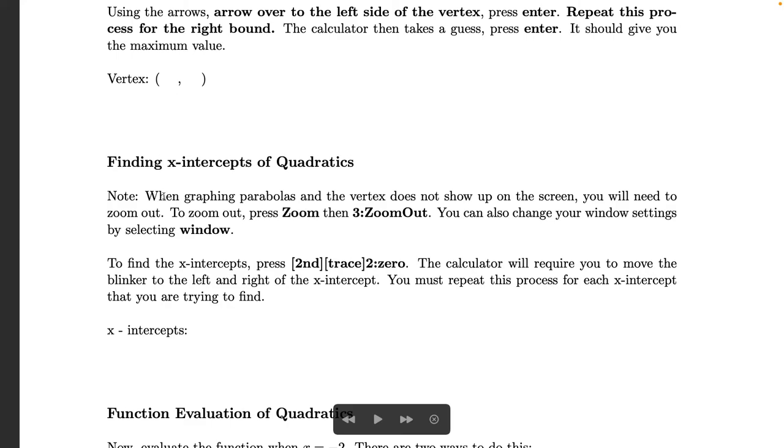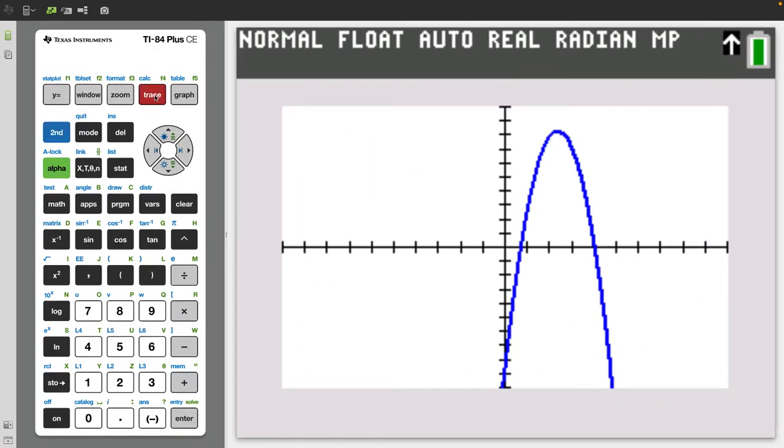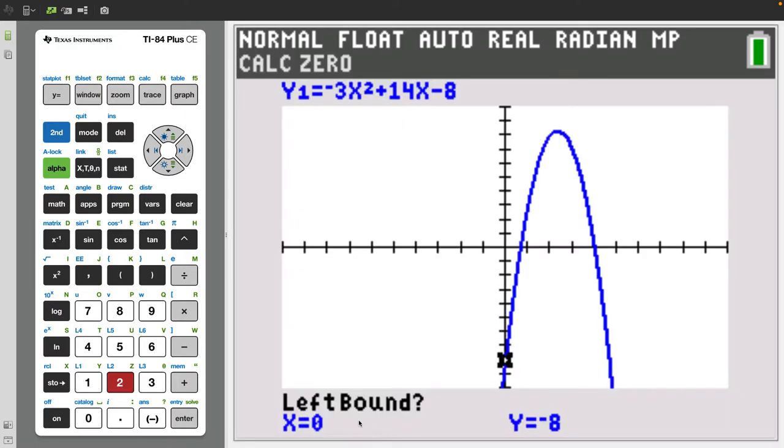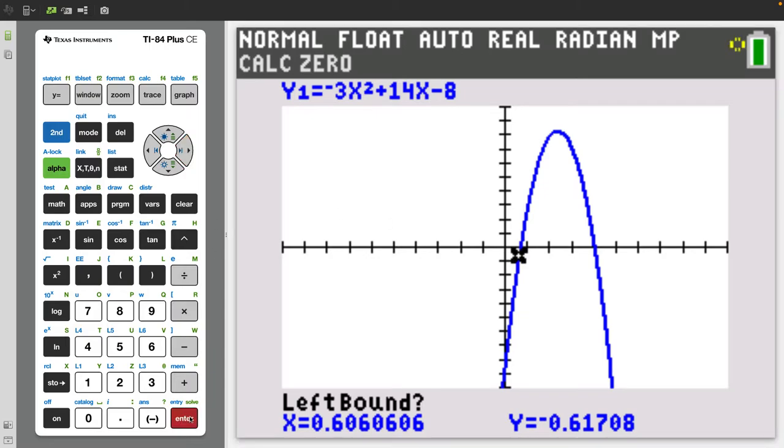Here in order to find x-intercepts you press second trace and then you'll look for zero. Here's where the vocab comes to help us. We have to remember that x-intercepts are the same things as zeros or the same things as solutions. So if we press second trace and then zero, second trace and then zero is number two. Now it's going to ask us for left and right bounds again. So here we want to help our calculator out by picking a number that's to the left of the x-intercept. So in this case it'll be below the x-axis and I press enter.